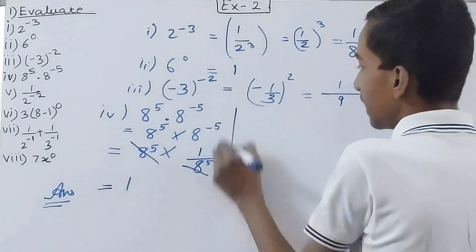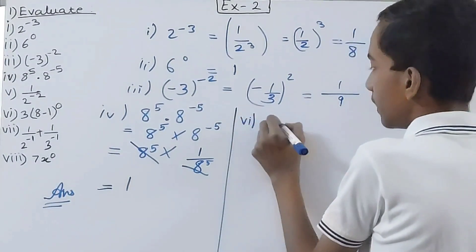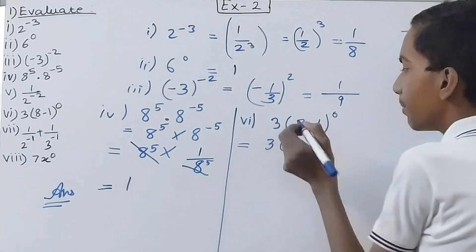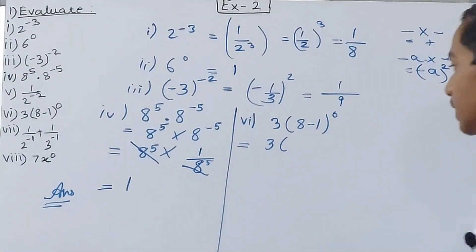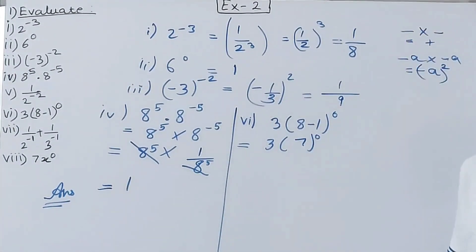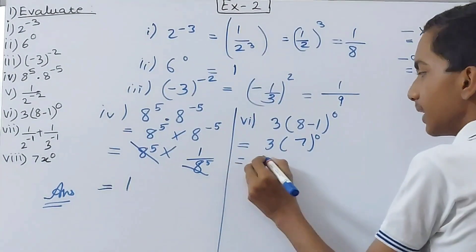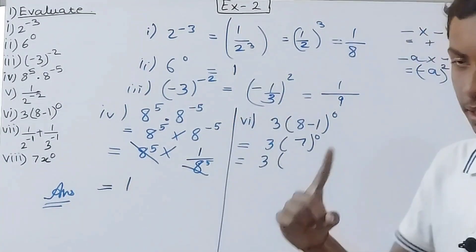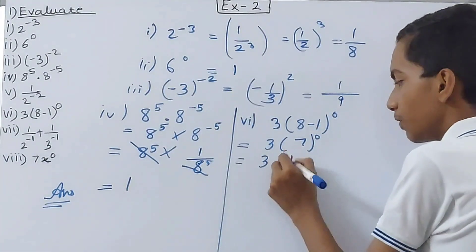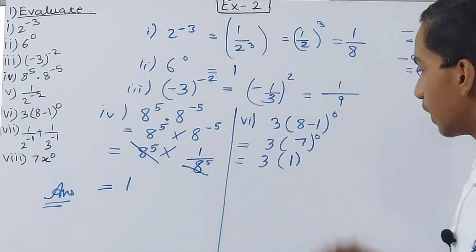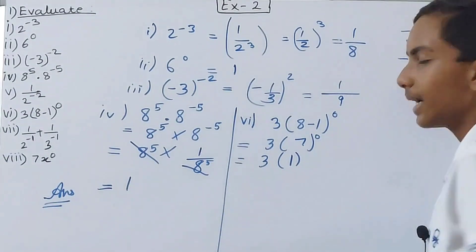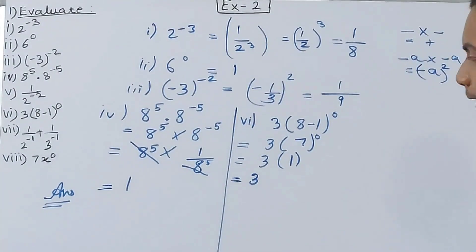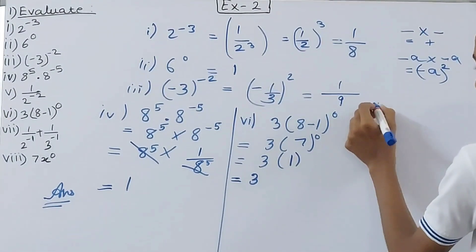The sixth part is 3 to the power (8 minus 1) to the power 0. So 8 minus 1 is 7, giving us 3 into 7 to the power 0. Any number raised to power 0 is 1, so 7 to the power 0 becomes 1. Then 3 into 1 — when there's no sign between a number and a bracket, it means multiplication — so 3 times 1 equals 3.